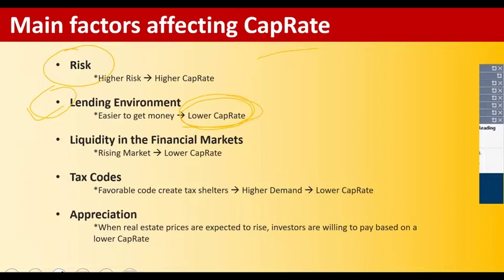Liquidity in the financial markets: a rising market leads to a lower cap rate. This is not always true, but essentially as prices go up, cap rates go down. Prices going up equals cap rate going down, which means that for the last five or six years, everywhere in the United States — even in Detroit — cap rates have been going down.